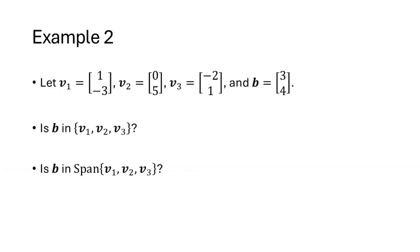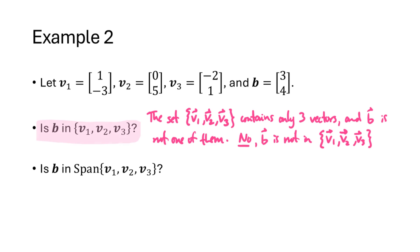Let's look at this example. We have three vectors v1, v2, v3 and a vector b, and are asked two different questions that look similar but are actually quite different. The first question asks whether b is in the set {v1, v2, v3} — notice the word 'span' is missing. That's just asking whether b is one of those three vectors. That set contains only three vectors, and b is not one of them, so the answer is no.